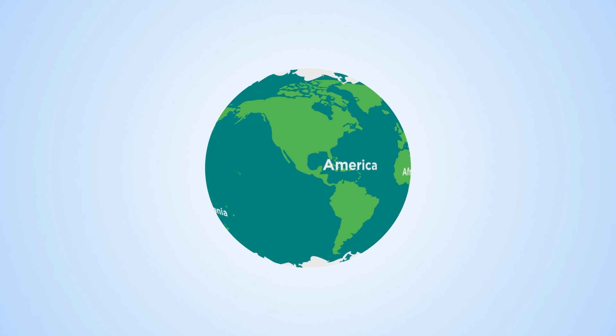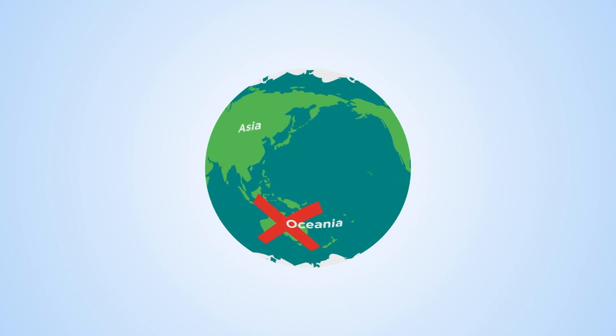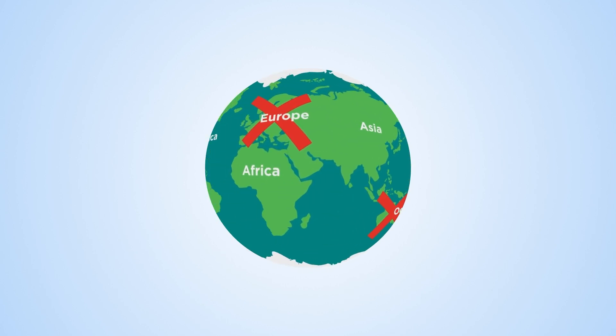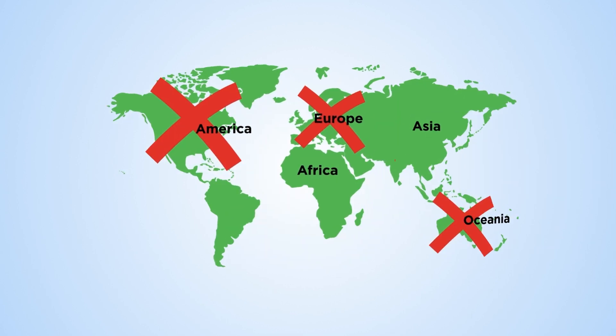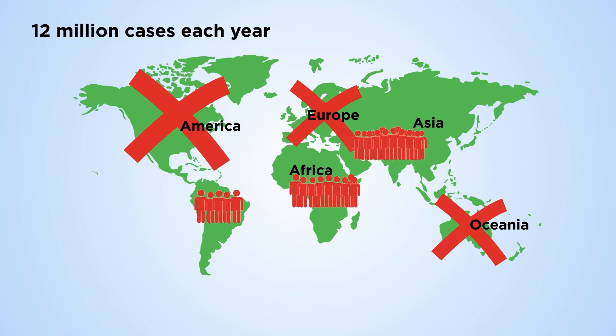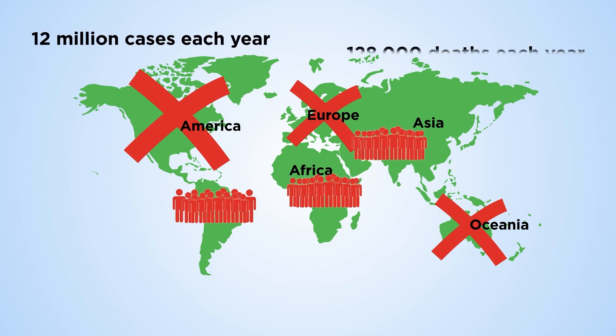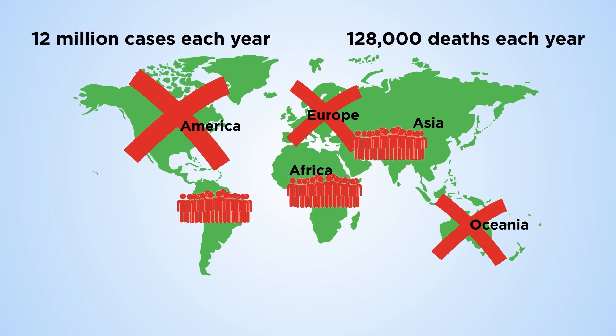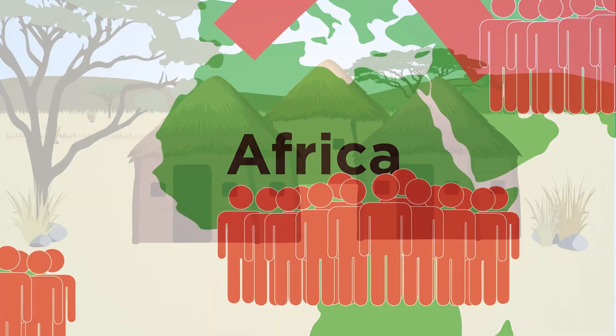Whilst mostly eliminated in industrialised countries, typhoid remains one of the oldest global health concerns, resulting in 12 million cases and 128,000 deaths each year.